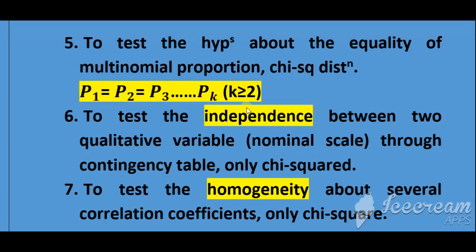Chi-square distribution is also used to test the independence between two qualitative variables, or two categorical variables. If you want to see the independence or association between two variables measured on a nominal scale, you use chi-square. Note: if variables are measured on an ordinal level, we use Spearman's coefficient of rank correlation. But for two categorical variables, through a contingency table, we use chi-square distribution.